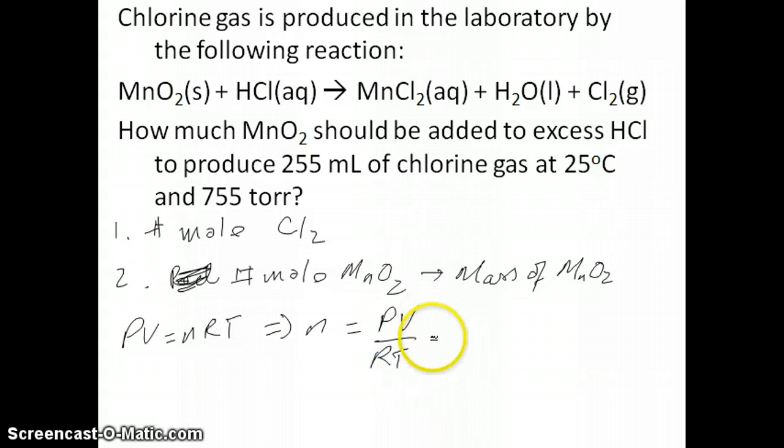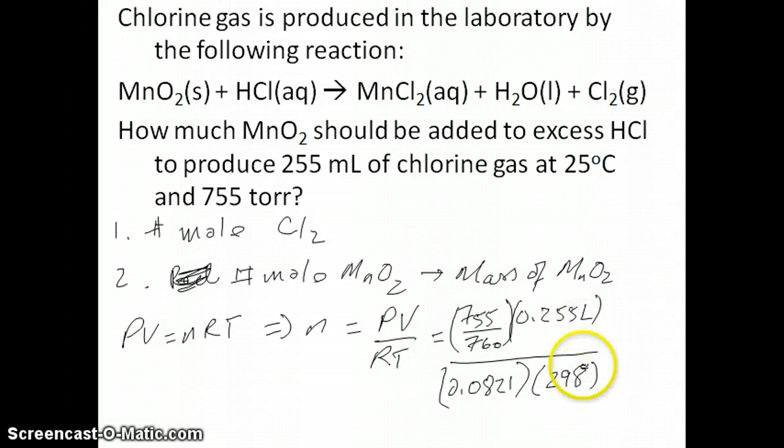Rearranging for number of moles n, you get n = PV/RT. Plugging in the numbers: 755 torr has to be converted to atmospheres because we're using R with units of liter-atmospheres, so the atmospheres have to cancel. The volume must be in liters: 255 mL or 0.255 L. Then R is 0.0821, and 298 is the Kelvin temperature of 25 degrees Celsius. Doing these calculations gives 0.010354 moles of chlorine gas.